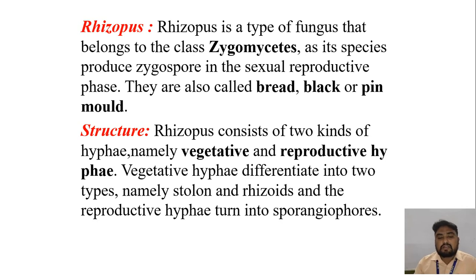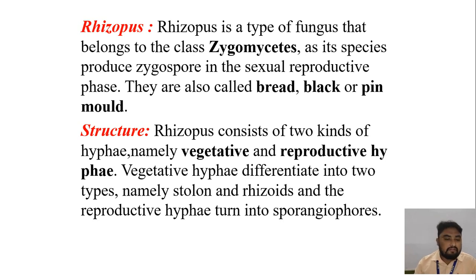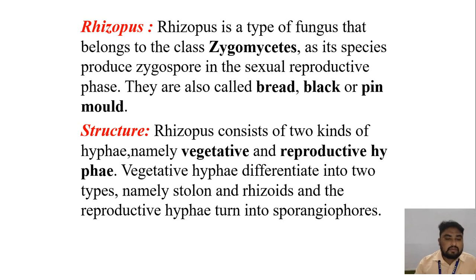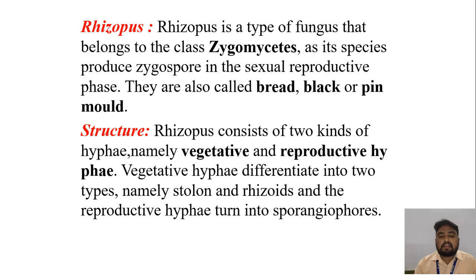Rhizopus consists of two kinds of hyphae: vegetative and reproductive hyphae. Vegetative hyphae differentiate into two types, namely stolons and rhizoids, and the reproductive hyphae turn into sporangiophores.